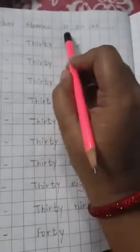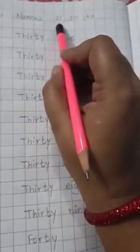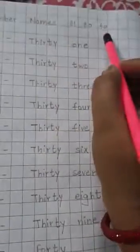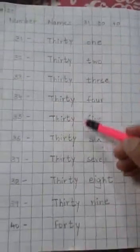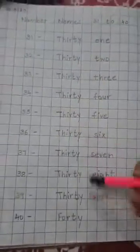So today you have to write numbers from 31 to 40 in your maths copy.